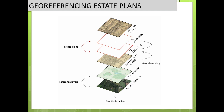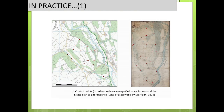I haven't georeferenced the Roy's maps, but I will use them to compare results, mostly for the first time series, which is important for the ancient woodland inventory, as I will explain later. To georeference a historical map in practice, we try to find features on the map that have remained stable until today to put into correspondence these historical maps on top of the modern reference system — what we call control points.